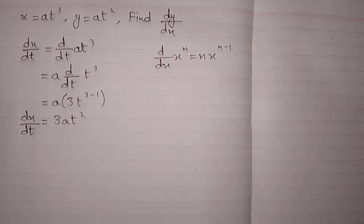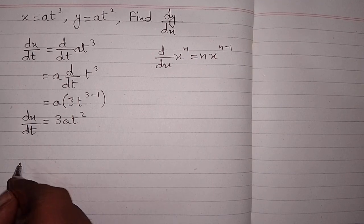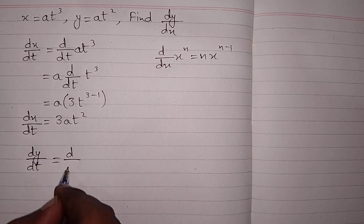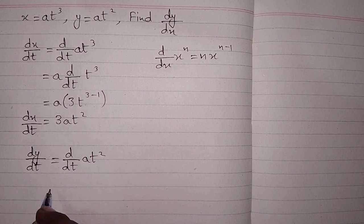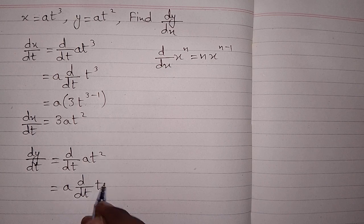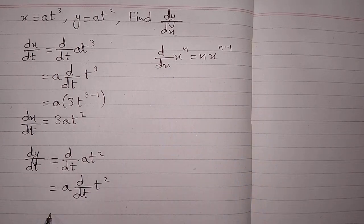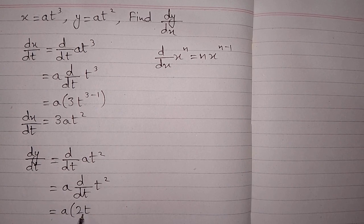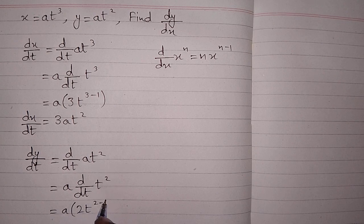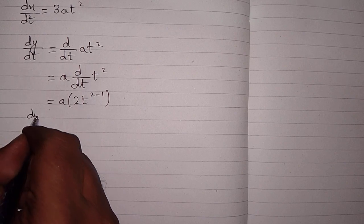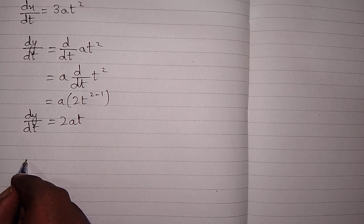Now we find the derivative of y with respect to t: d by dt of at squared. The coefficient a is written before the derivative, giving a times d/dt of t squared. Applying the power rule again, the power of t which is 2 is written before t and we subtract 1 from the power, so dy by dt is equal to 2at.